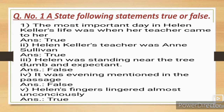Helen Keller was standing near the tree, dumb and expectant — Helen Keller darakt ke paas khadi thi, khamosh — false. It was evening mentioned in the passage — yani passage mein sham ka zikr tha — false. Helen's fingers lingered almost unconsciously — Helen Keller ki ungliyaan vay rapti se chal rahi thi — true.